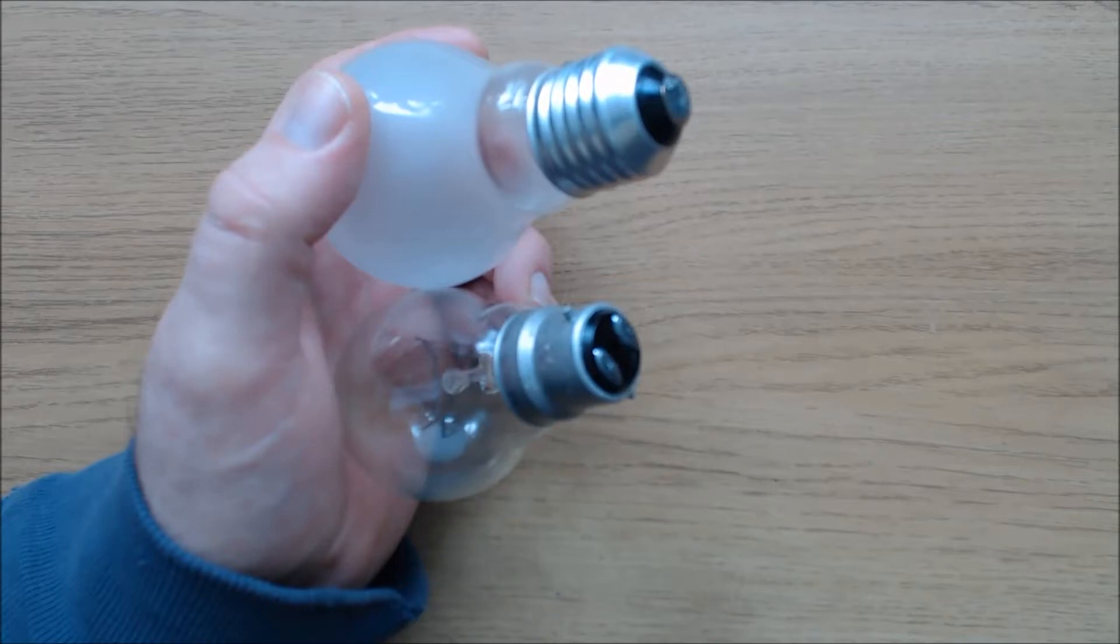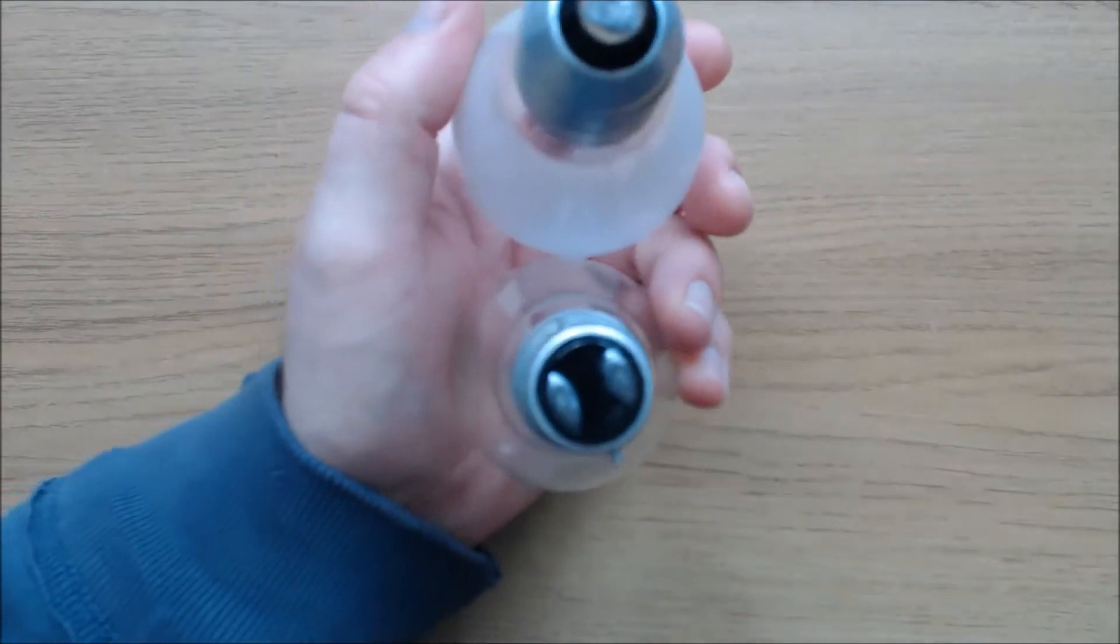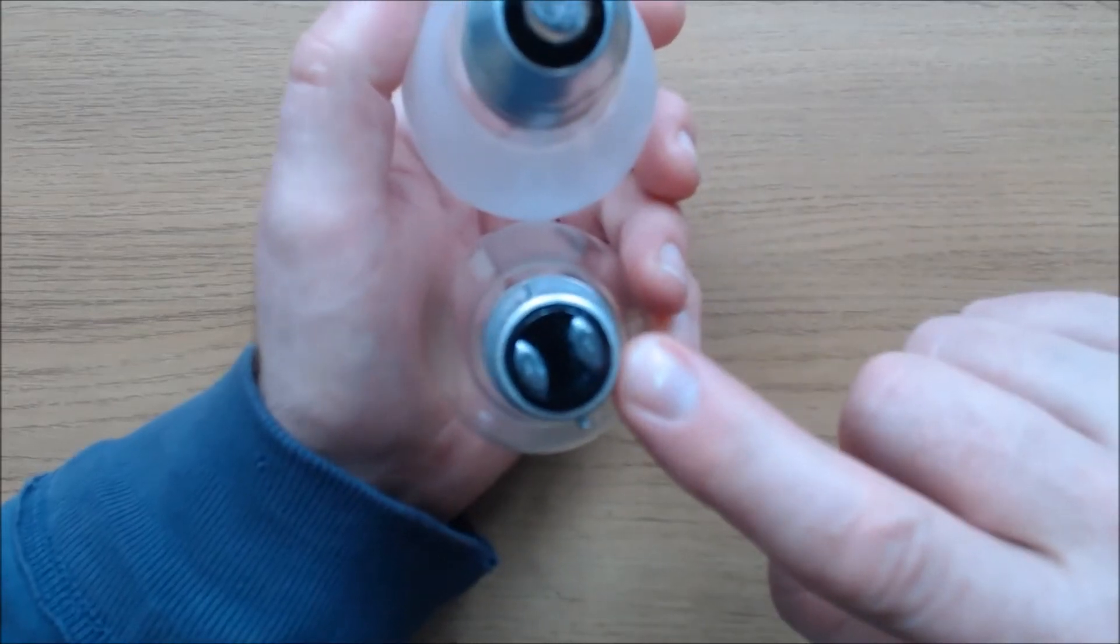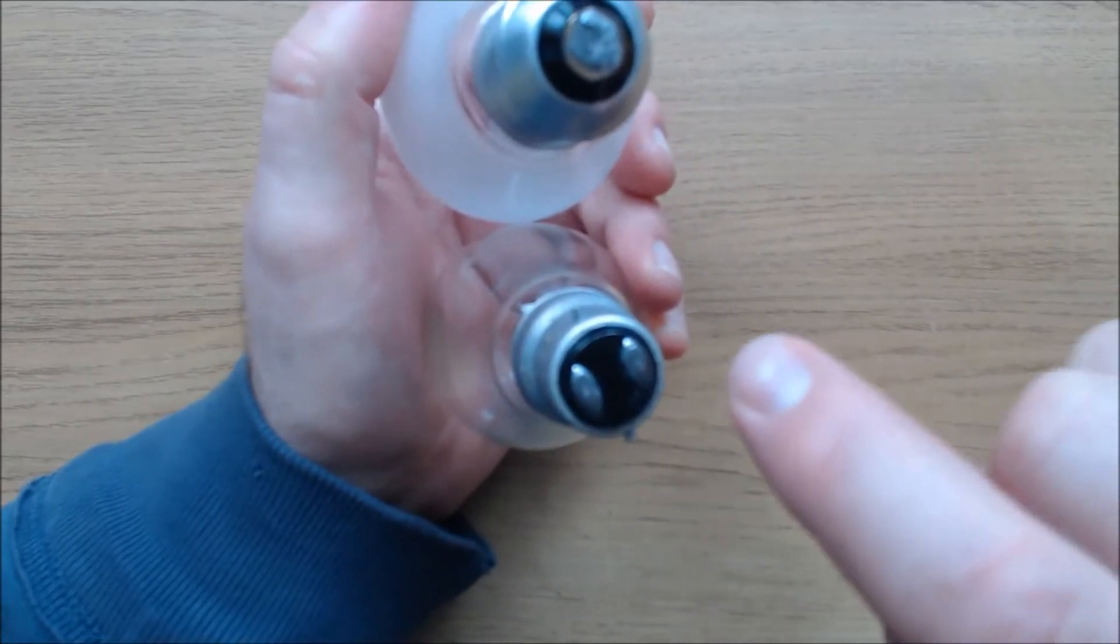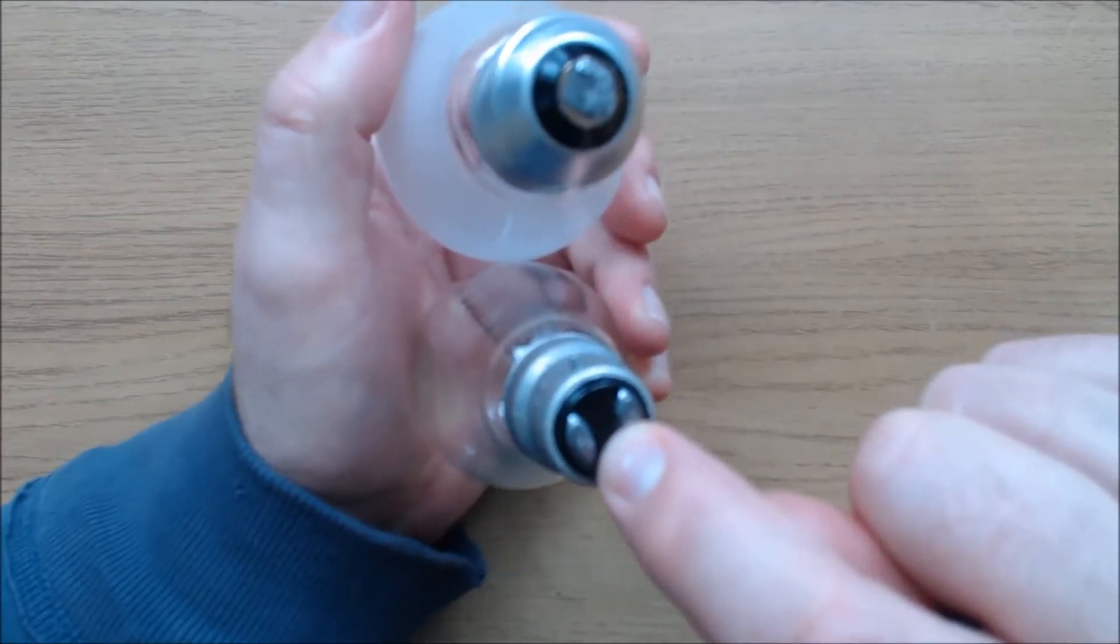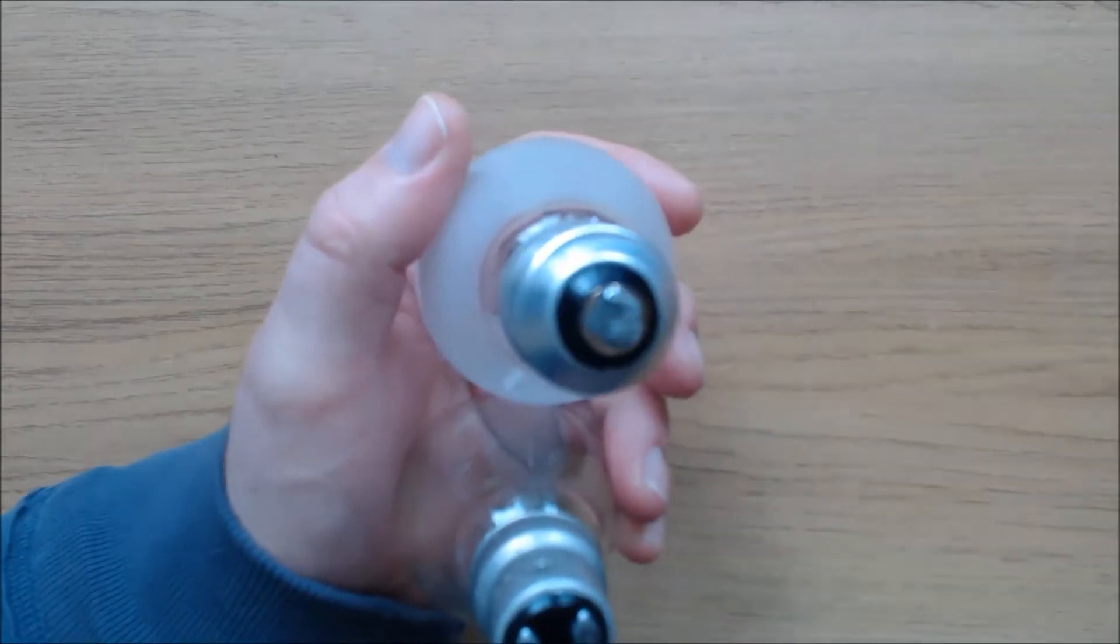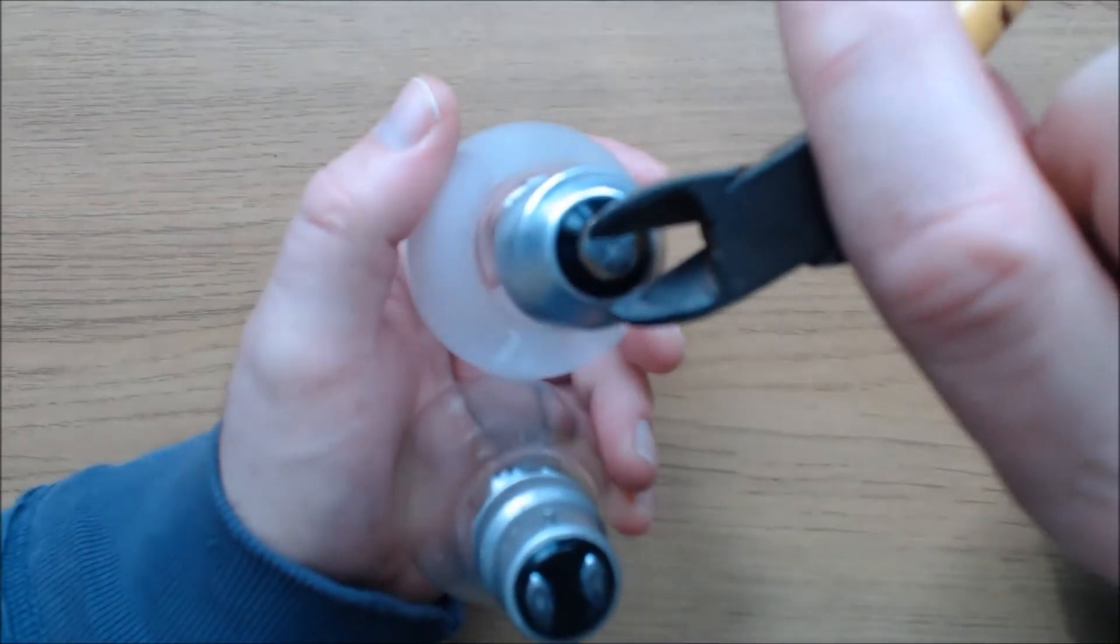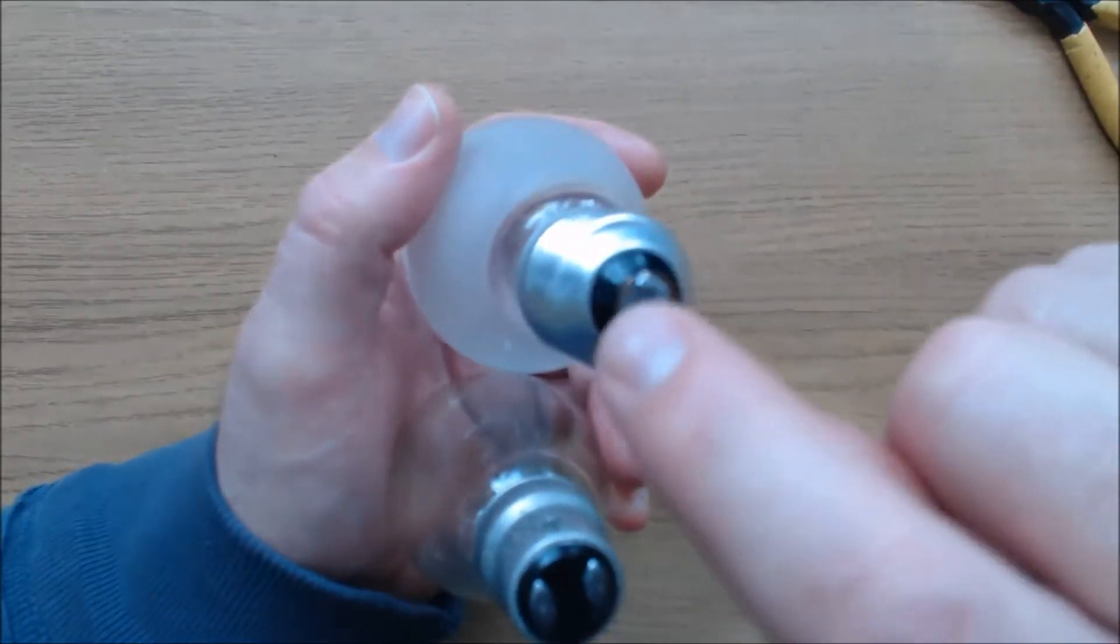So now that we've got all the materials we can start, and the first job is to open up the light bulbs. If you're using a bayonet type bulb, drill through the two contacts and then use some needle nose pliers to break away the insulator. If you're using a screw type bulb with a single contact, you can just get some pliers, rip off the contact, and then break away the insulator.